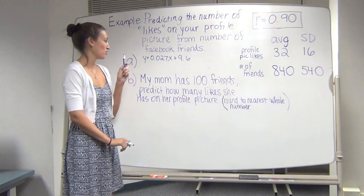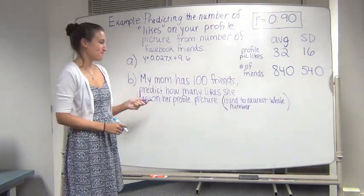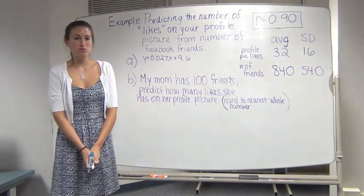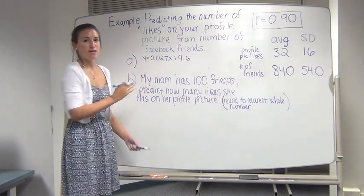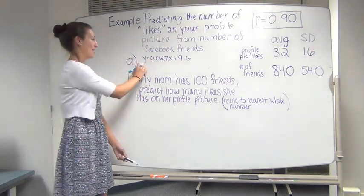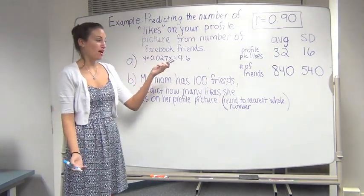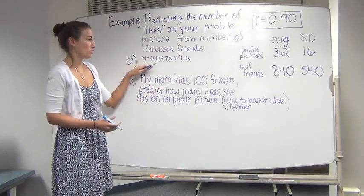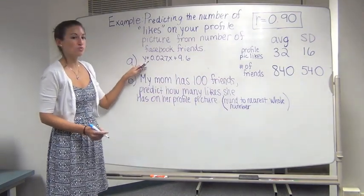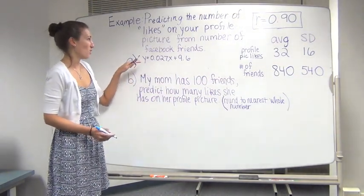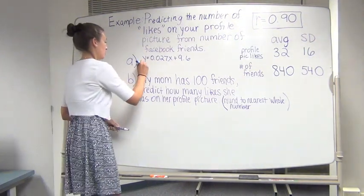So in part A, we just found a regression equation. And now in part B, we want to know that if my mom has 100 friends, how many likes will she have on her profile picture? But before we do that, let's look at this equation and remember what exactly y and x are, because sometimes it's confusing to remember if y is the profile picture likes or the number of friends. So let's rewrite this equation using our actual variables. So y - y is what we're predicting. So in this problem, what are we predicting again? The likes. The number of likes. Right.